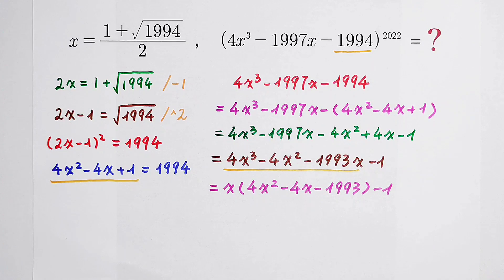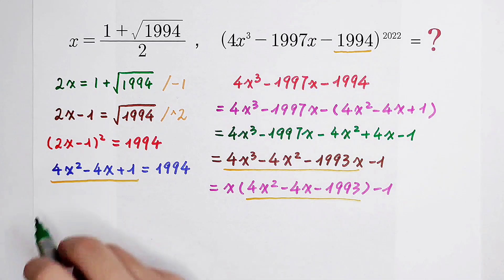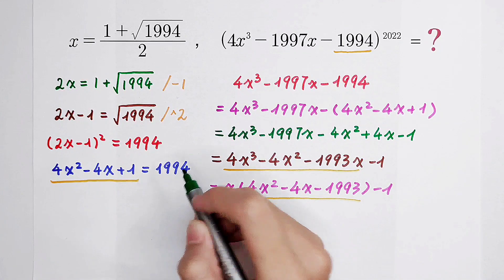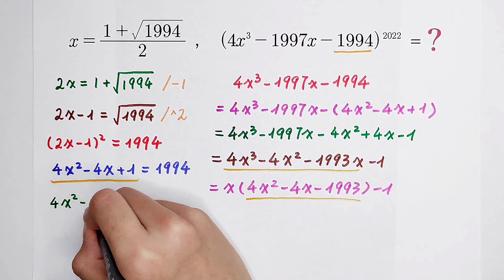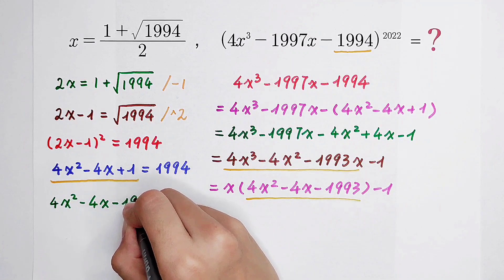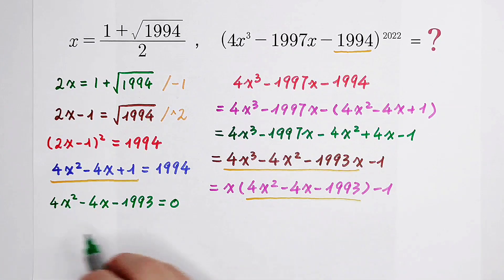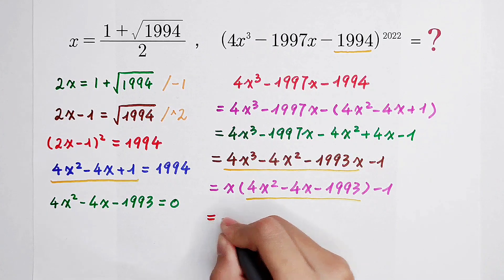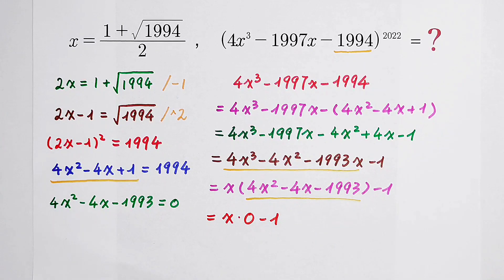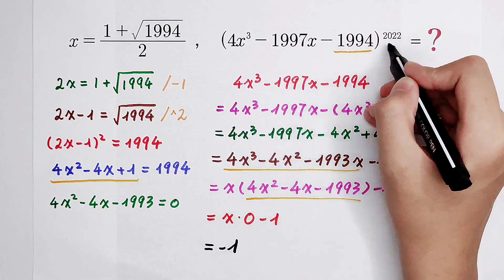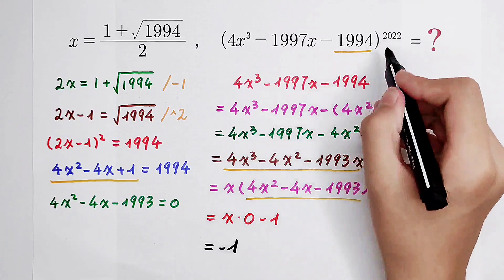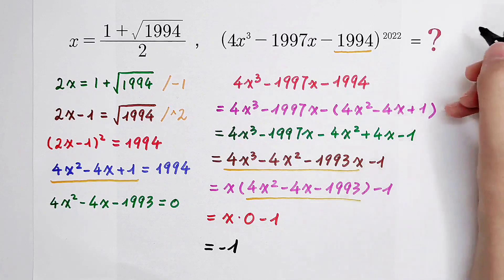Now, what should we do with 4x squared, minus 4x, minus 1993? Don't worry. From our earlier step, we minus 1994 on both sides. You get 4x squared, minus 4x, plus 1, then minus 1994, which is minus 1993. That equals 0. So it's the same! The value of this is just x times 0, then minus 1. All numbers times 0 is 0. So 0 minus 1 is minus 1. Then, to the power of 2022: minus 1 to the power of 2022 is 1. So the final answer is 1.